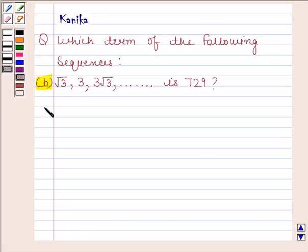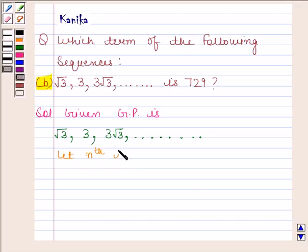Let's now begin with the solution. Given GP is root 3, 3, 3 root 3 and so on. Let nth term of the given GP is 729.